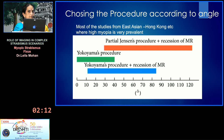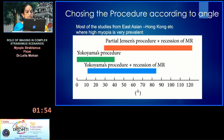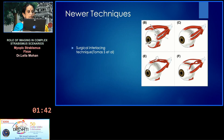Most of the studies are done in East Asian countries; we don't see strabismus fixus that often. It has been suggested that partial Jensen's procedure works for angles between 30 to 100–120 prism diopters when done bilaterally. Yokoyama's procedure addresses up to 40 prism diopters, and Yokoyama's procedure with medial rectus recession covers cases from about 15 to 90 prism diopters of esotropia.